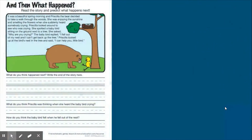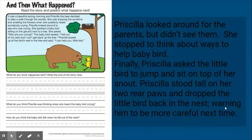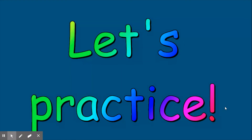Priscilla looked around for the parents but didn't see them. She stopped to think about ways to help baby bird. Finally, Priscilla asked the little bird to jump and sit on top of her snout. Priscilla stood tall on her two rear paws and dropped the little bird back in the nest, warning him to be more careful next time. The end. You can see I addressed the problem, the missing parents, then provided a solution — how to get the bird back in the nest. That is exactly what we need to do when adding an ending to a story.